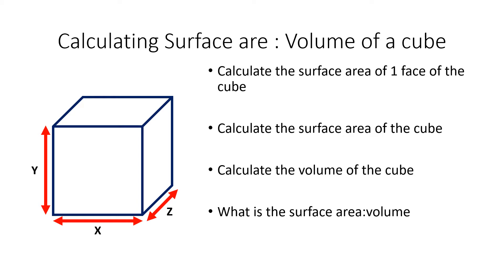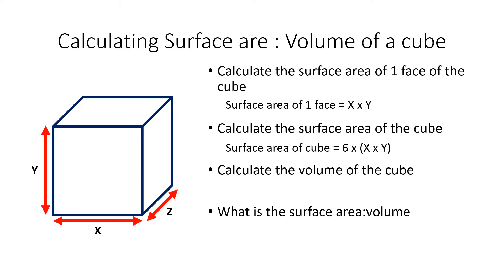To calculate the surface area of one face, we simply multiply x times y — or x times z for another face — either is fine. To calculate the total surface area, we take the area of one face and multiply it by six, since there are six faces: so it's 6 × (x × y).